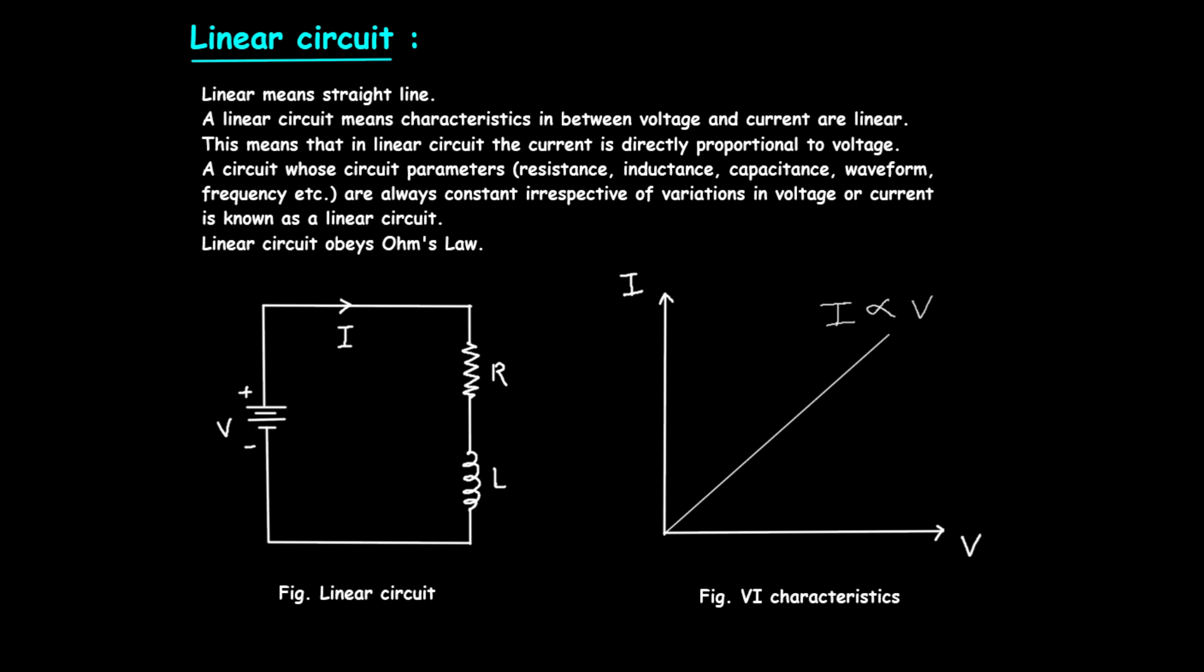In summary, a linear circuit maintains a direct proportionality between voltage and current, following Ohm's law. The parameters like resistance, inductance, and capacitance remain constant, ensuring the circuit's linearity. The V-I characteristics of a linear circuit are represented by a straight line, emphasizing the proportional relationship between voltage and current. Understanding these fundamentals is essential for anyone working with electronic devices and systems.